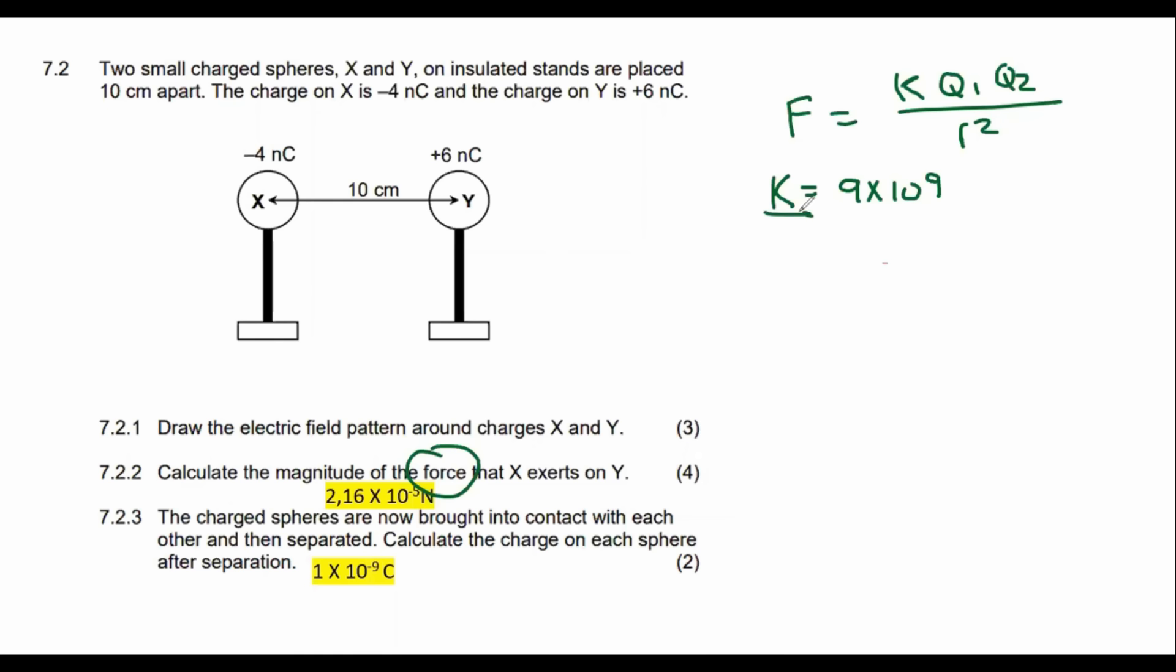When they give you the formula sheet in the exam, on the front page there's that table that has all of these constants like g, mass of the earth, radius of the earth, capital G, Planck's constant. They're also going to give you K. When you look at that constant, look at the units that they are using. You'll see there'll be a Newton, there'll be an M somewhere and there'll be a C somewhere. That unit there can tell you exactly what units you have to use. It tells you that the force is measured in Newtons, the distance is measured in meters, and we're going to work in Coulombs. You can use that for any of the constants.